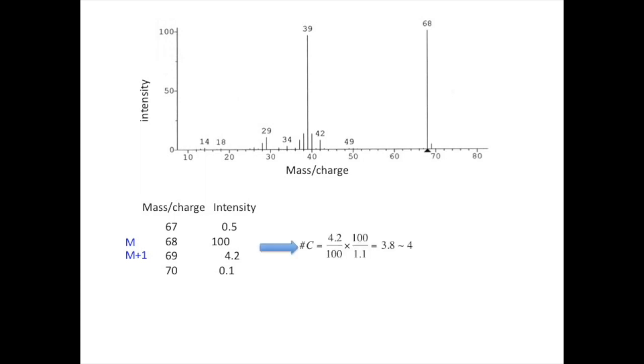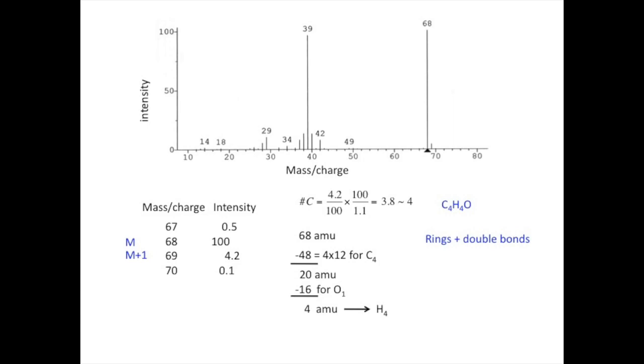We get 3.8, so we assume 4 carbon atoms. This accounts for 48 atomic mass units, leaving us with 20. We don't see any indication of chlorine, bromine, sulfur, or silicon from the M plus 2 peak. The molecular ion has an even mass, so we can rule out nitrogen. Fluorine has an atomic mass of 19, but if an atom of fluorine were present, that would leave us with only one atomic mass unit and consequently one hydrogen atom. Let's assume that we have an oxygen atom. That leaves us 4 atomic mass units that could be explained by 4 hydrogen atoms. So we have a molecular formula of C4H4O.